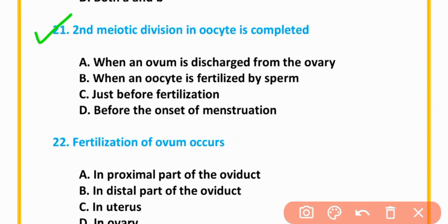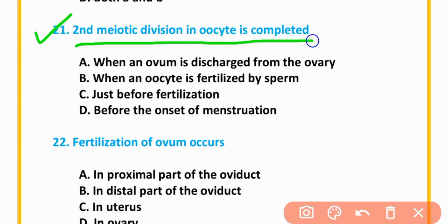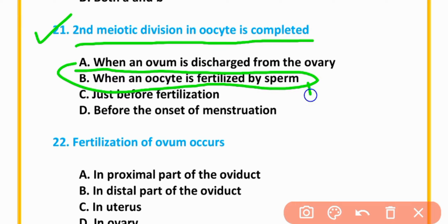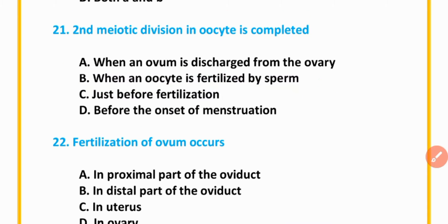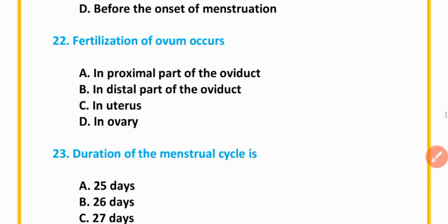MCQ number 21: Deveopment in oocyte is complete when an oocyte is fertilized by sperm. Option B is correct.